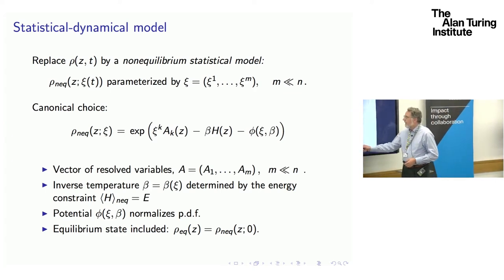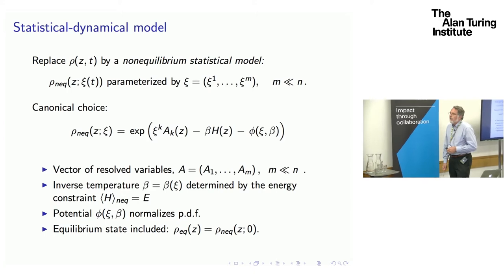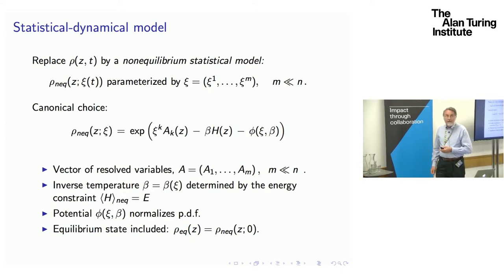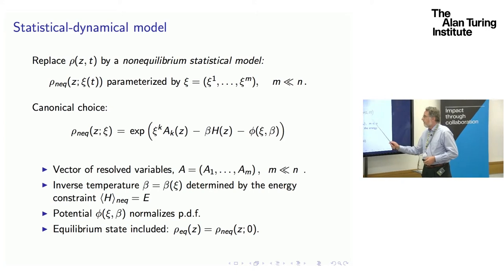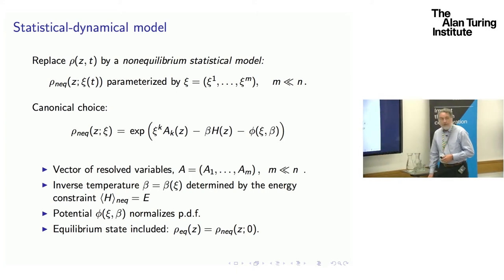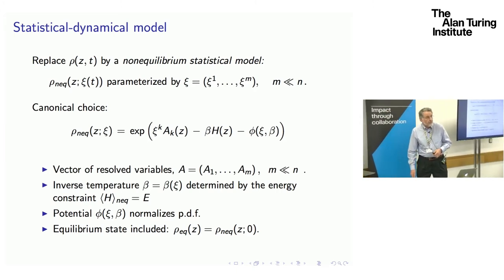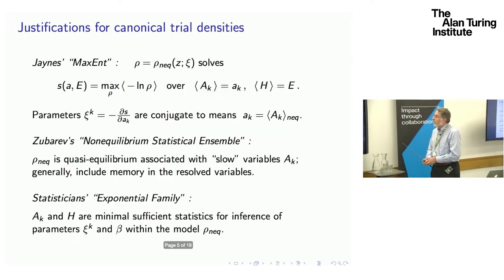We have a vector of observables. I will actually slave the beta to the psi so as to conserve mean energy. So this is parameterized only by the psi's. We're normalized by some potential, which is like a free energy. Let me make sure that I've got equilibrium within my class. So let's say when psi equals zero, equilibrium is achieved.